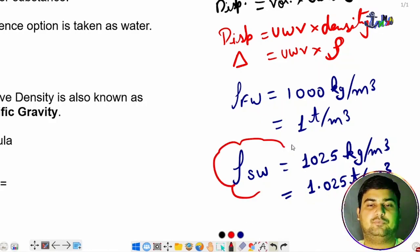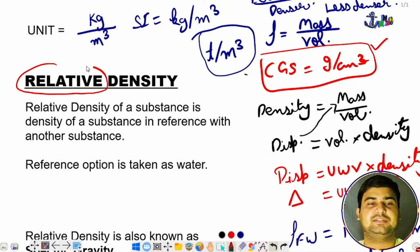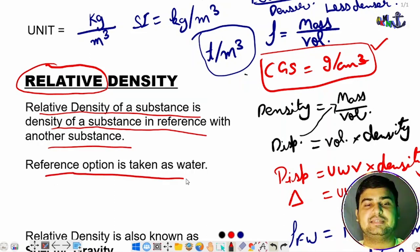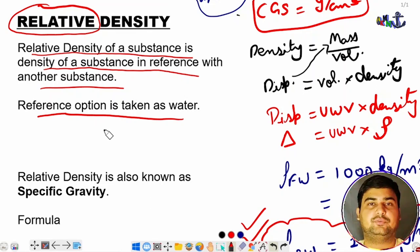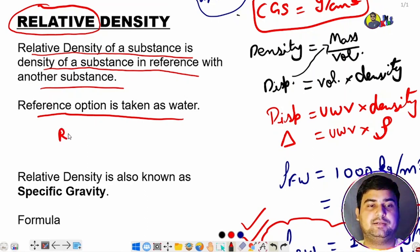The next topic is relative density. The term 'relative' means in relation to something else. So relative density is the density of a substance in reference to another substance — typically water. In questions you may be given the relative density of the water a ship is floating in, for example RD = 1.015. RD of oil equals density of oil divided by density of water.